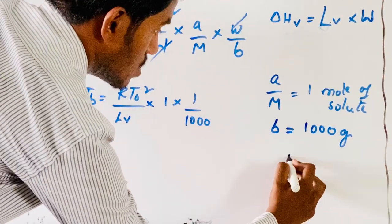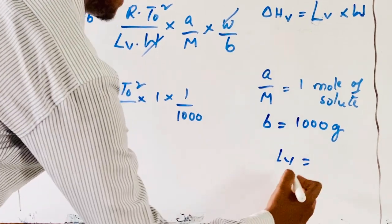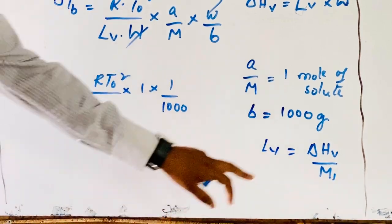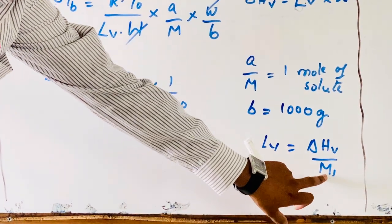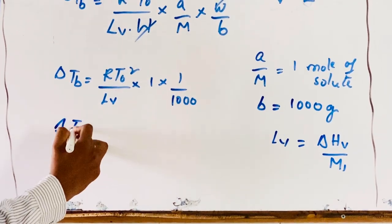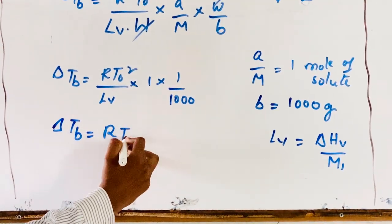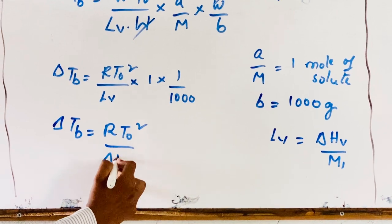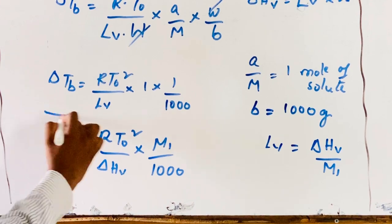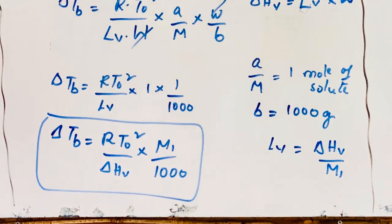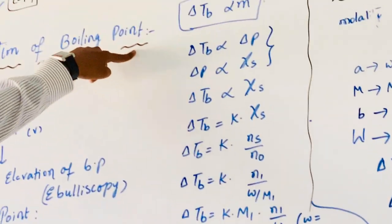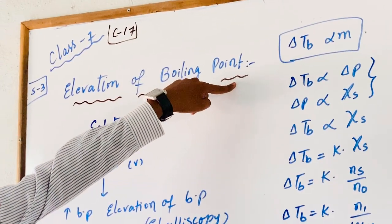Then Lv equals delta Hv by M1, where M1 represents molecular weight of solvent. Substituting, delta Tb equals R T0 squared divided by delta Hv into M1 by 1000. This equation gives delta Tb, the elevation of boiling point, also called ebullioscopy.